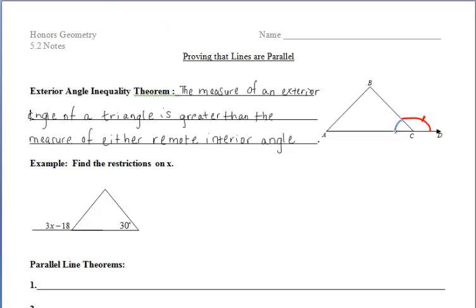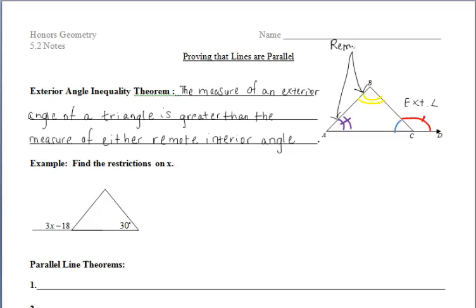One interior angle is this blue angle. Angle BCA is an adjacent interior angle, while this yellow angle, angle ABC, is one of the remote interior angles, and the purple angle, angle BAC, is the other remote interior angle. So this theorem is saying that this red exterior angle must have a measure greater than each of these remote interior angles — the red angle must be greater than the purple angle and greater than the yellow angle.